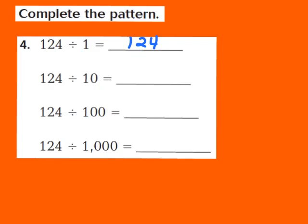In the next part of our pattern, we see 124 being divided by 10. In the number 10, there is one zero. So I'm going to write down 124 and, because there is one zero in 10, I'm going to move my decimal point one place to the left. Our answer now turns out to be 12 and 4 tenths.